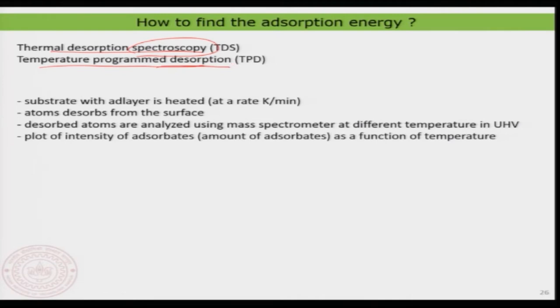What do you do in this technique? It is something very simple. Everything happens in an ultra high vacuum chamber — please keep that in mind always. Within this UHV chamber you have a surface with your ad layer adsorbed on it. This surface is going to be heated at a rate, and the atoms evaporating into the vacuum will be detected using a mass spectrometer. As a function of temperature, you measure the amount of adsorbed atoms coming back from the surface.